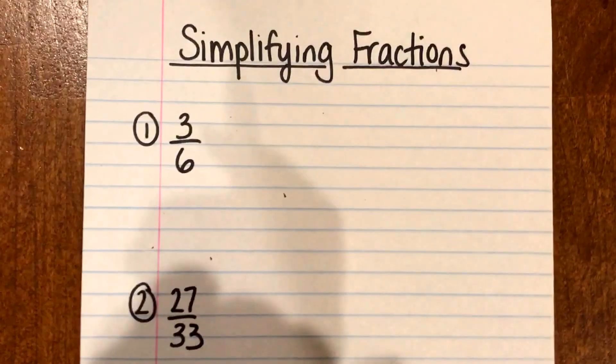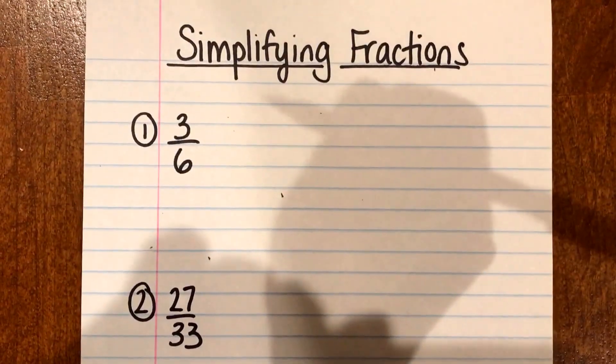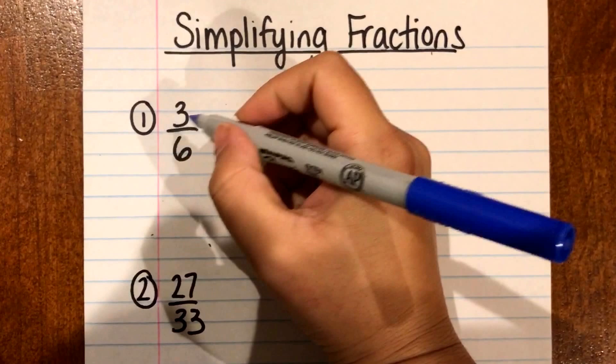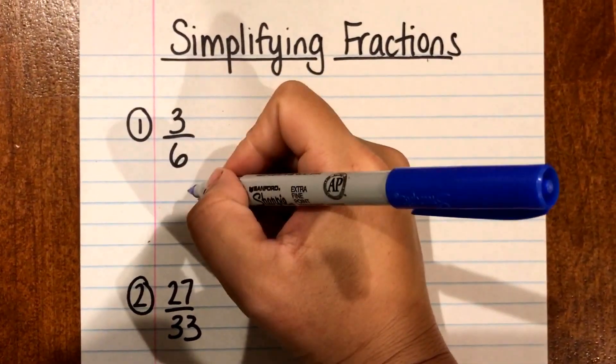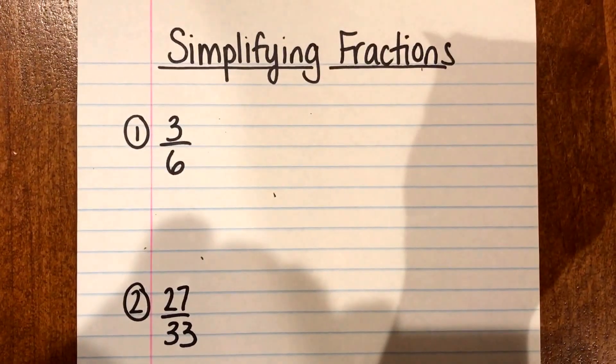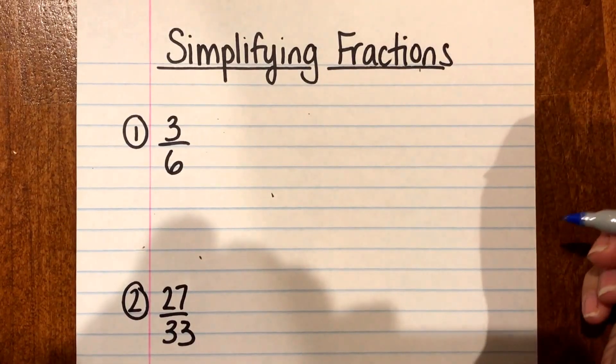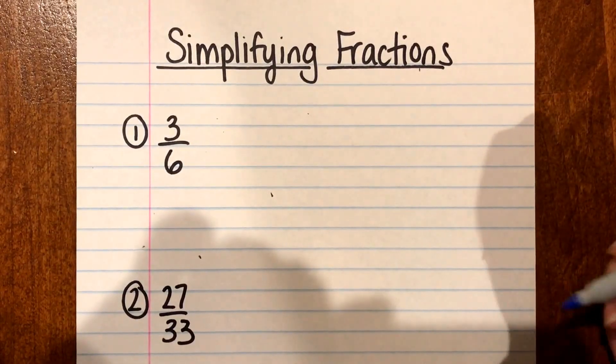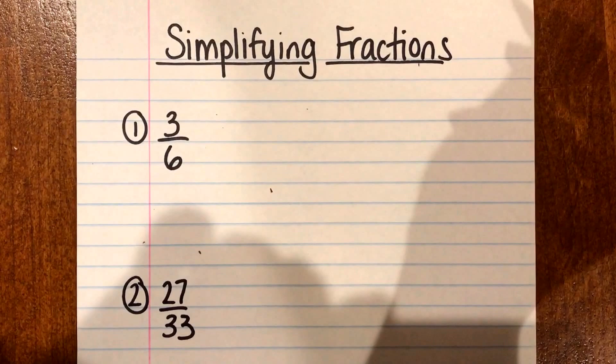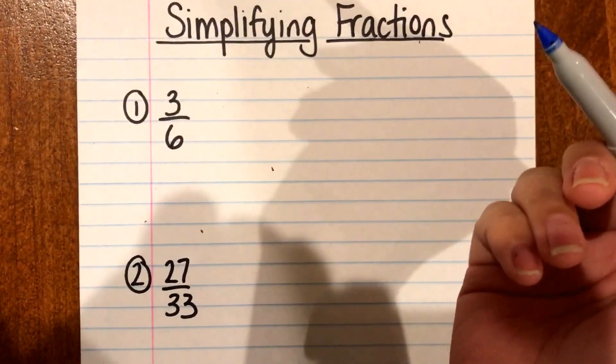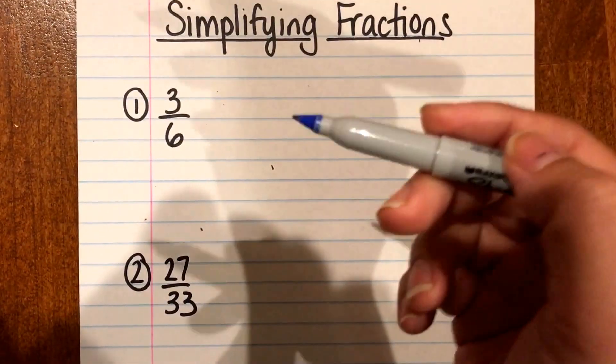In this video I'm going to show you how to simplify fractions using greatest common factor. So for number one I have 3/6 and when you're finding the greatest common factor to simplify you can use either the F method or the Euclidean algorithm division method. Whichever one you think is easier. So for each one I'm going to show you using a separate method.